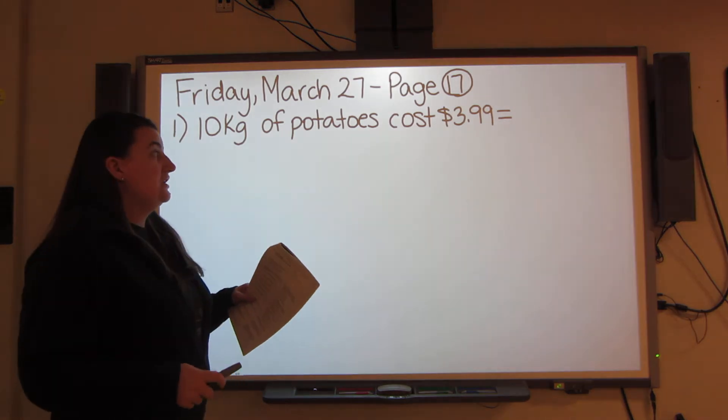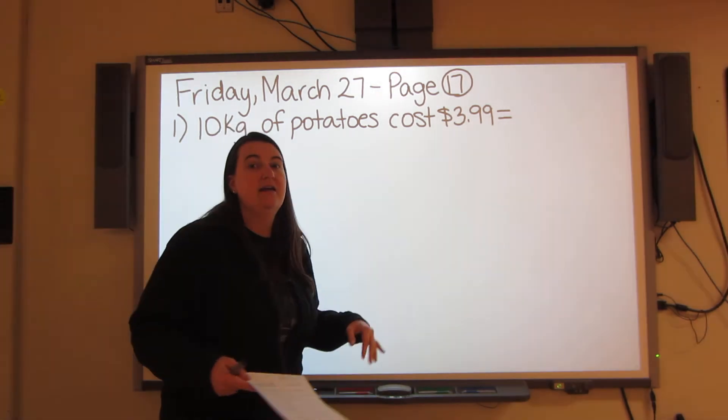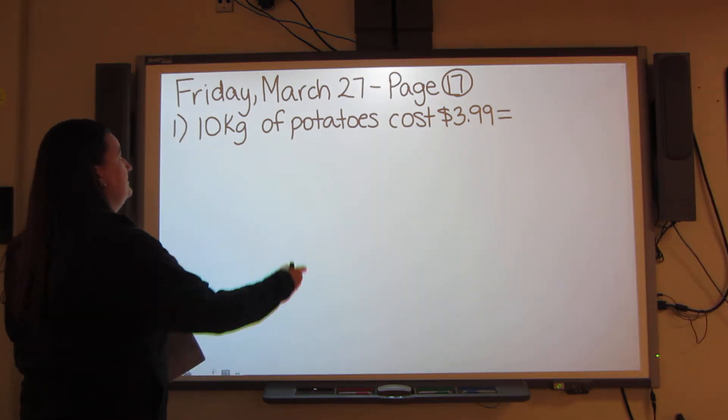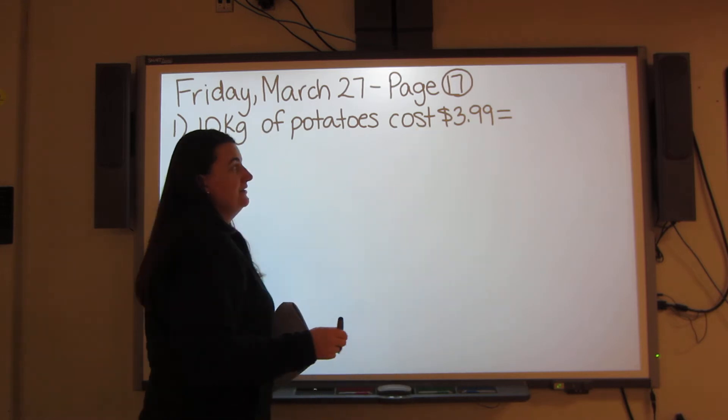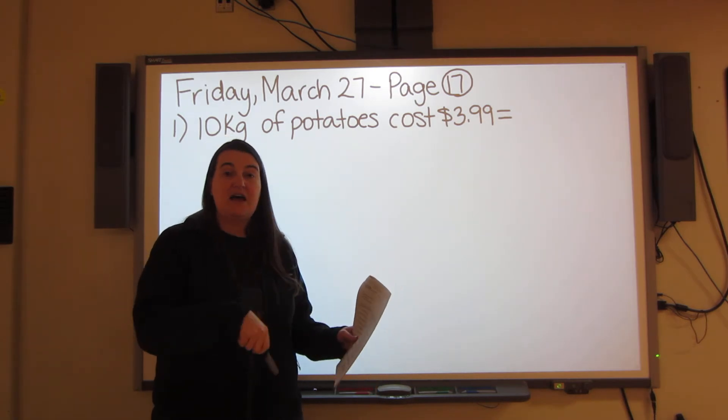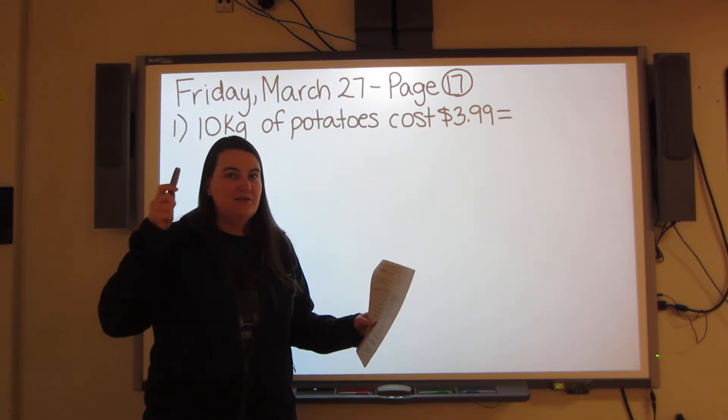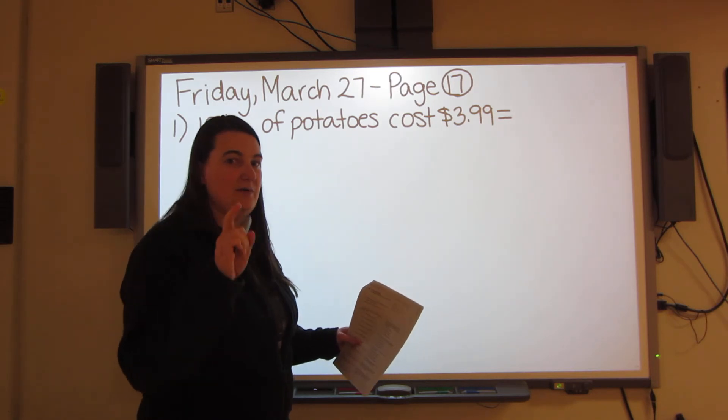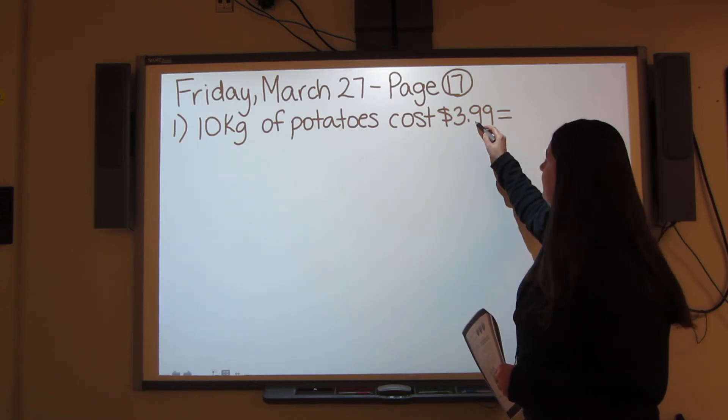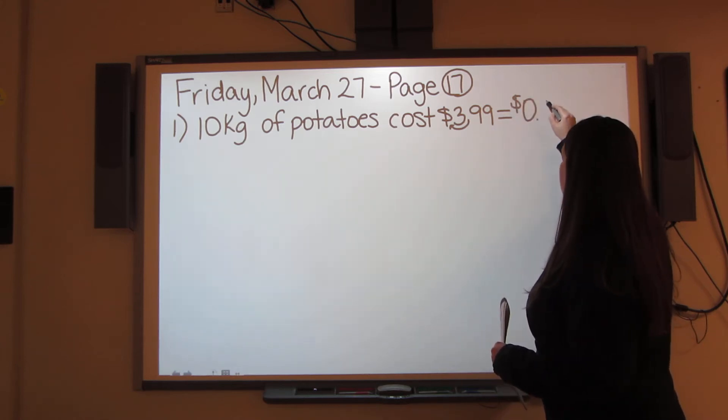It's asking you to find the unit price of the potatoes. You get 10 kilograms of those potatoes for $3.99, but how much would you pay for only 1 kilogram? So what you'll need to do is divide. You take your 10 and you divide it into $3.99. Now, remember powers of 10. There's going to be a number of times in your questions today that you're going to be dividing by 10 or 100. When you're dividing by 10, you're just moving the decimal one spot. So I move my decimal one spot over. So I've got 0.3.